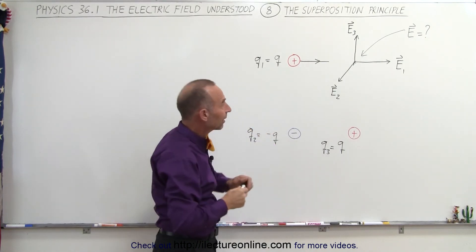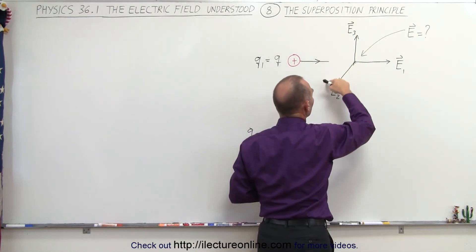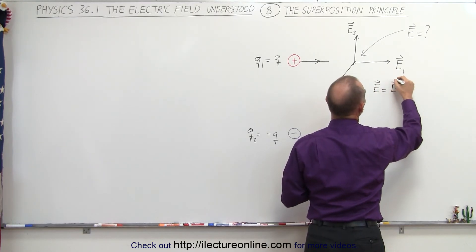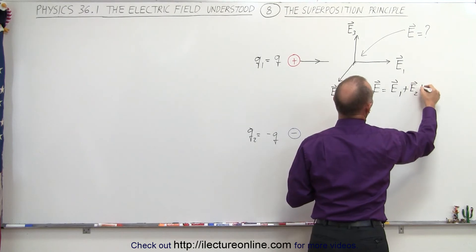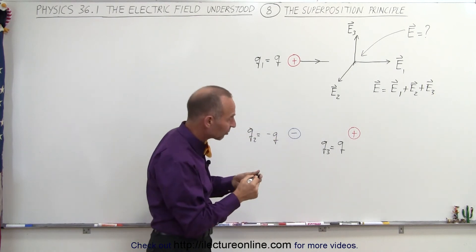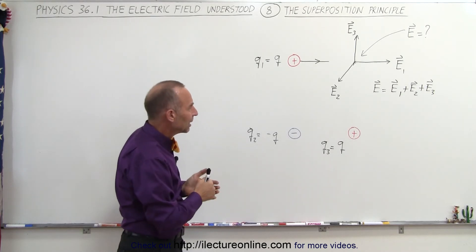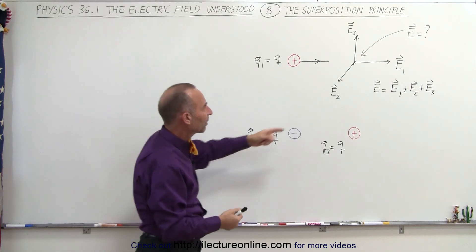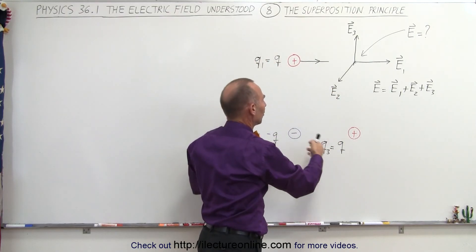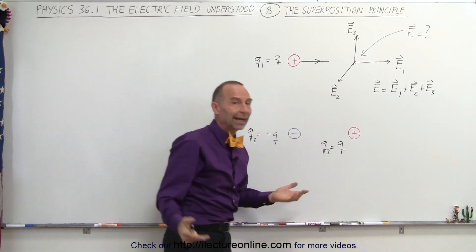Now, to find the net electric field at that location, we would simply add those three vectors together: E1 plus E2 plus E3. So the electric field at that location is simply the vector sum of E1 plus E2 plus E3. Of course, to do that, we would have to find the X and Y components of each vector, add all the X components together, and add all the Y components together — but we'll show you an example of how to do that. Here we just want to indicate that to find the electric field anywhere as caused by a multitude of charges, we simply find what the electric field is for each charge separately, and then do a vector sum. And that's how it's done.